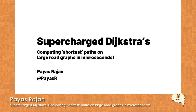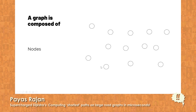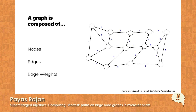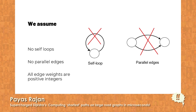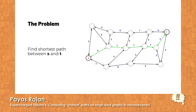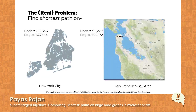A graph is composed of nodes, edges, and edge weights. We shall consider only simple graphs — no self-loops and no parallel edges — and we shall assume that edge weights are always positive integers. The problem we are trying to solve is to find the shortest path from a source S to a target T in the graph. Sounds simple, but the real problem is finding the shortest path on the graph of New York City and the San Francisco Bay Area.